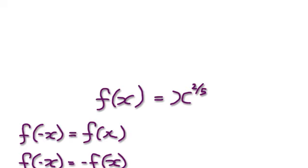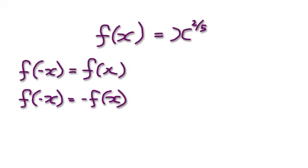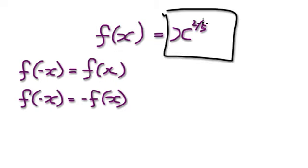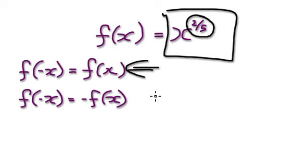OK, so now it's your turn to have a go. Given this function here, f of x equals x to the power of 2 over 5, establish if this is an even function, an odd function, or neither.